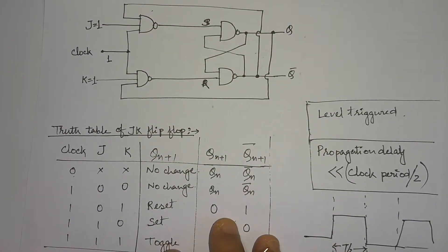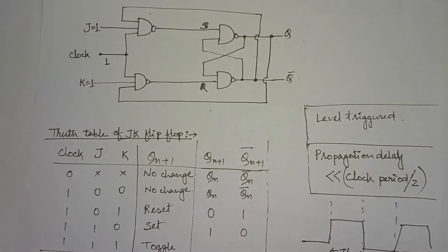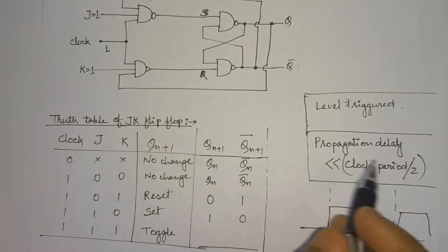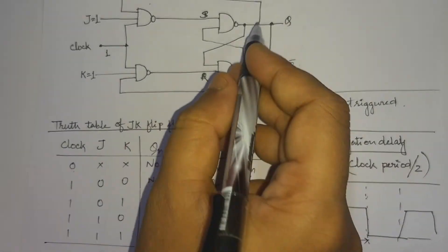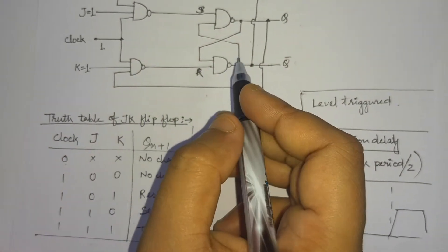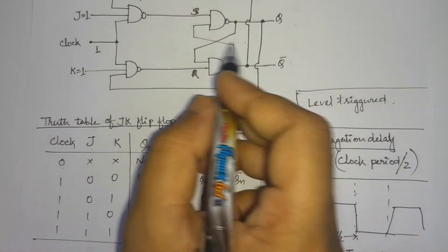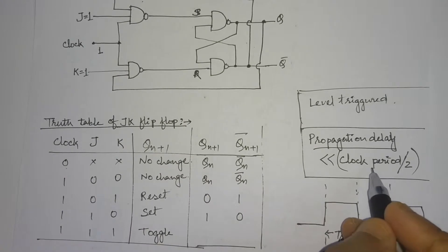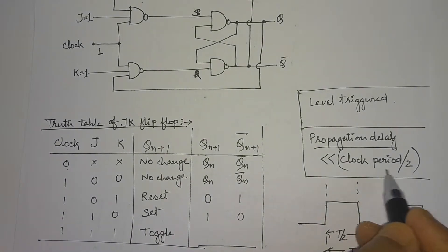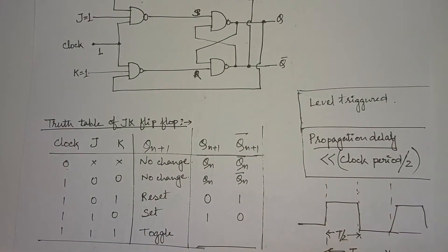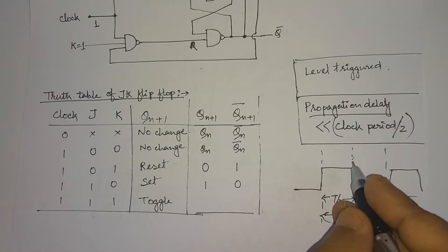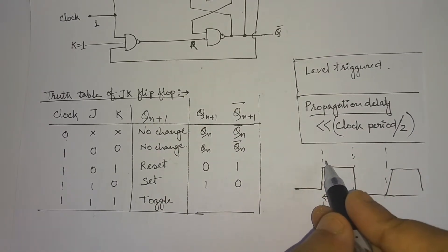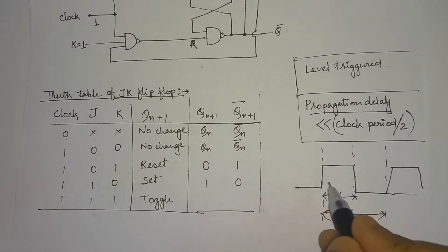The propagation delay of this JK flip-flop is much less than the clock period divided by 2. The clock period is T, so T/2 is the high duration we consider. We assume Q=1 and Q-bar=0 as the initial present state output.